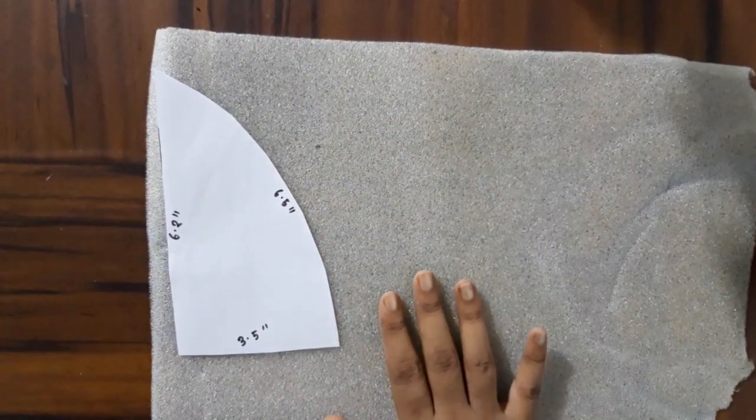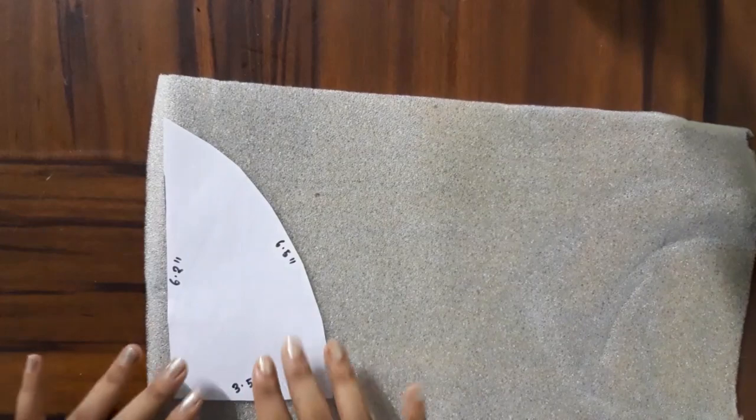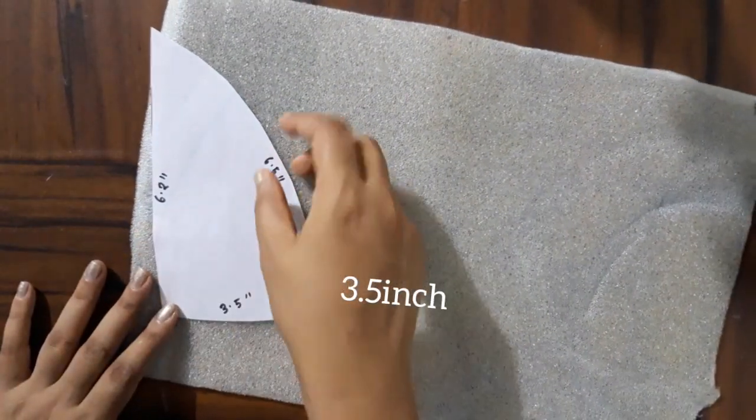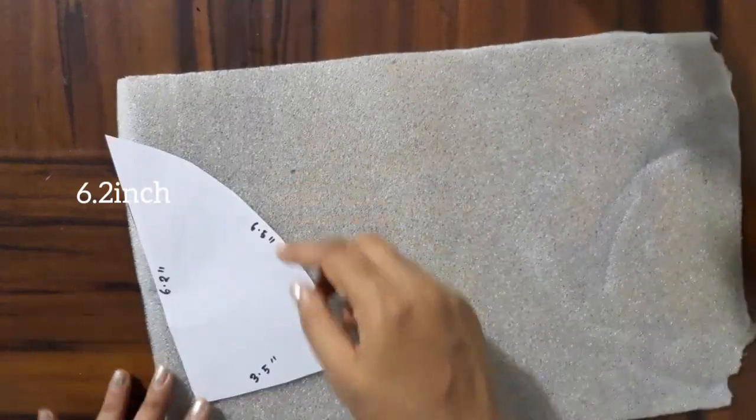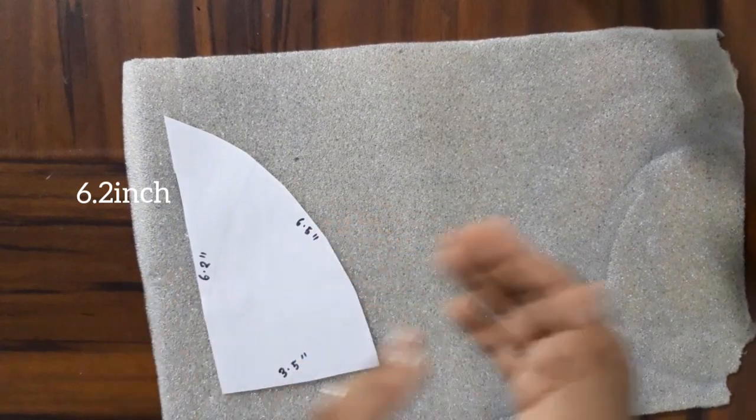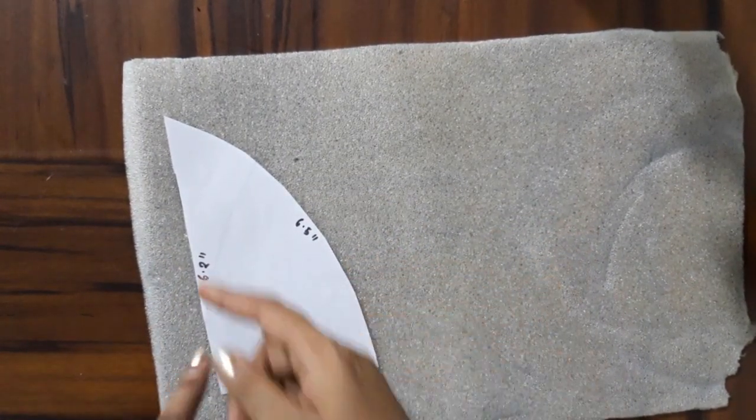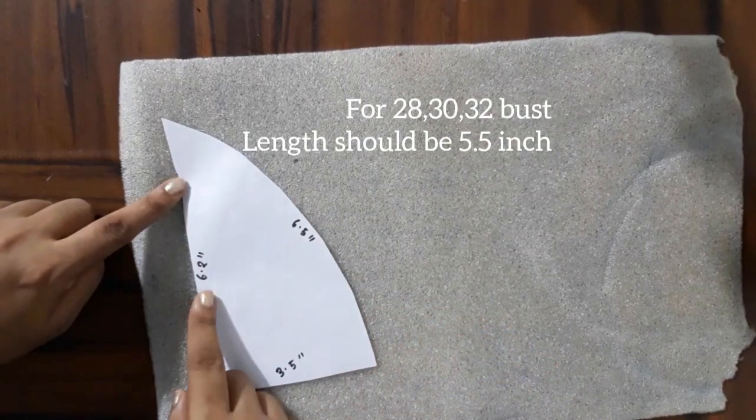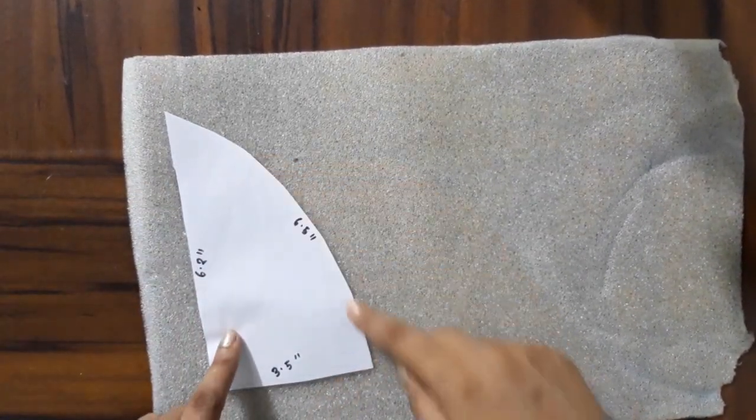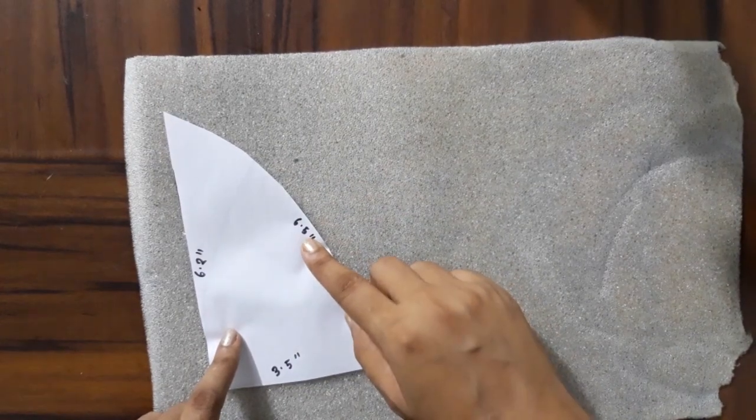So guys, I made this bra pad pattern. You can see this measurement. For the 28, 30, 32 bra sizes, you want to make this length. For this side length, 6 inches.